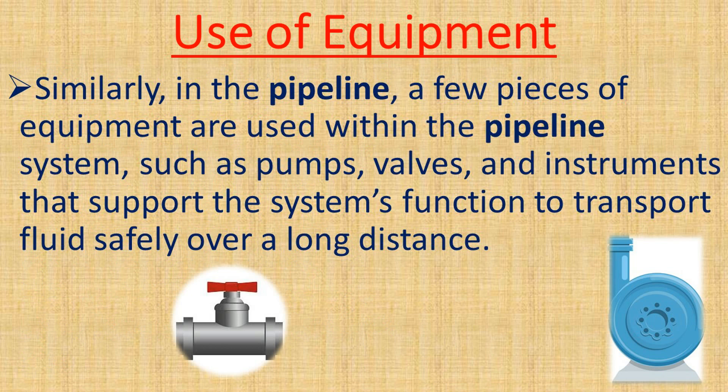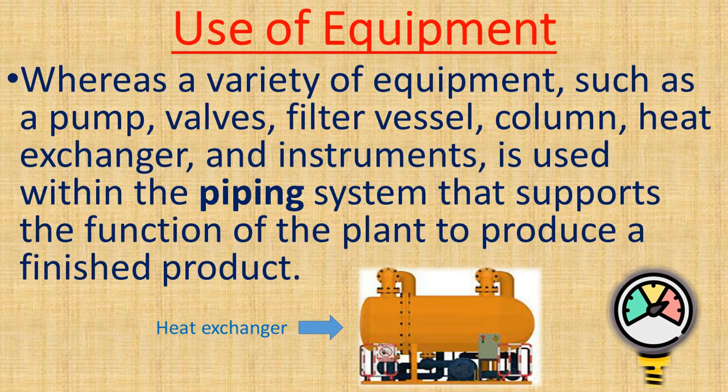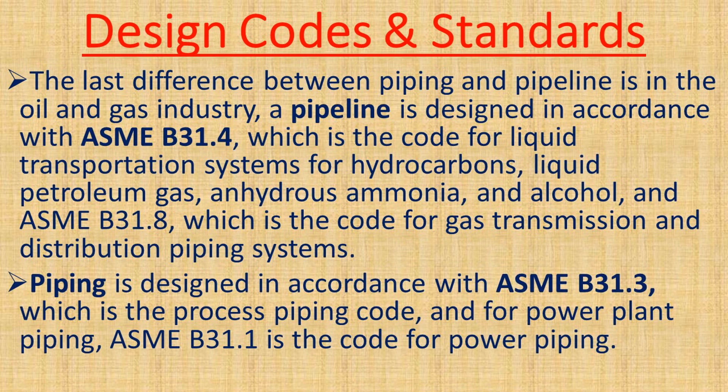Similarly, in a pipeline, a few pieces of equipment are used — such as pumps, valves, and instruments — that support the system's function to transport fluid safely over a long distance. Whereas in piping, a variety of equipment such as pumps, valves, filters, vessels, columns, heat exchangers, and instruments is used to support the function of the plant to produce a finished product.